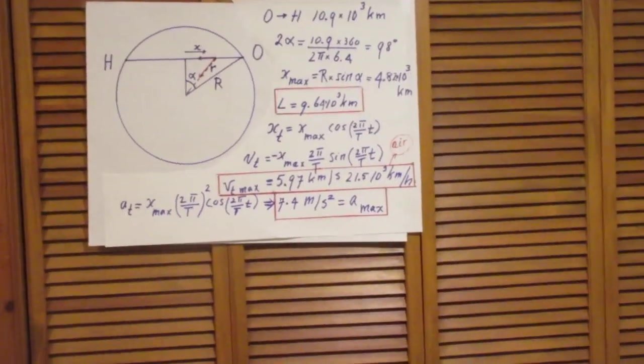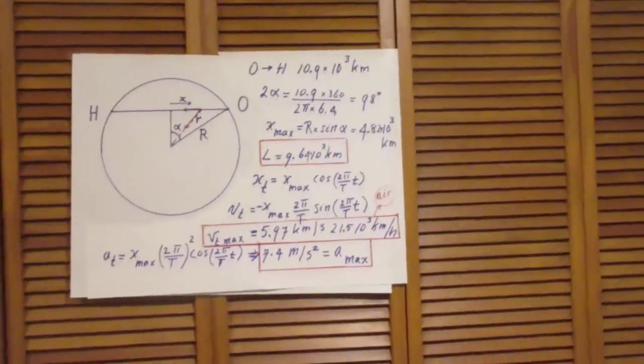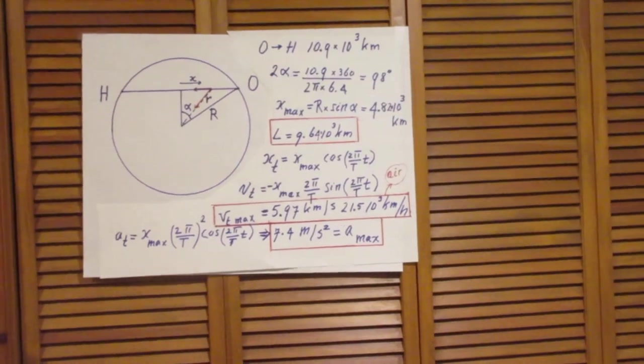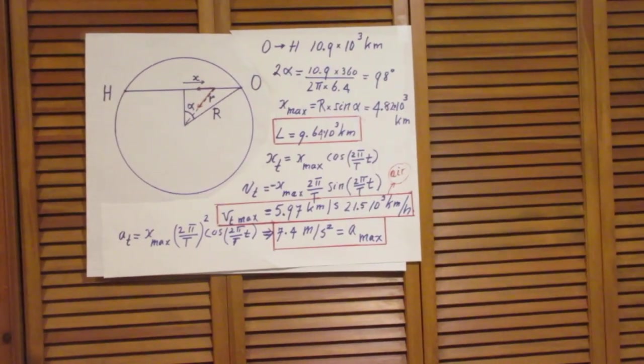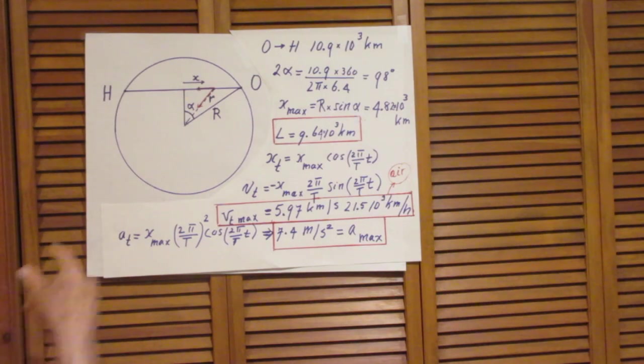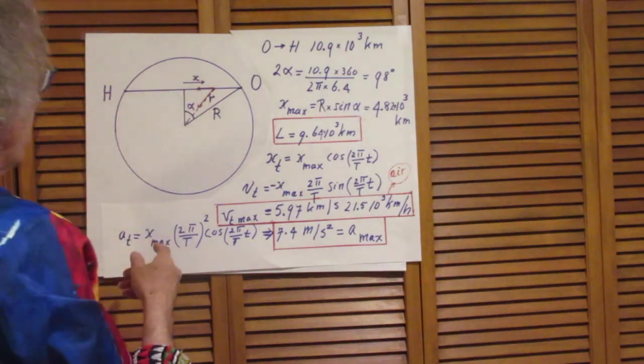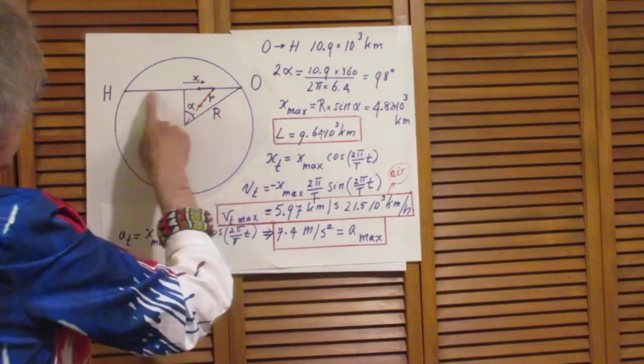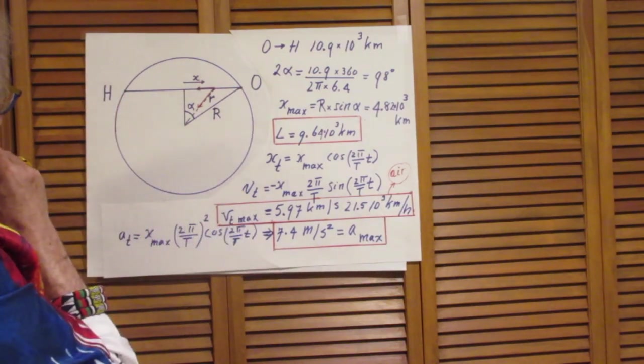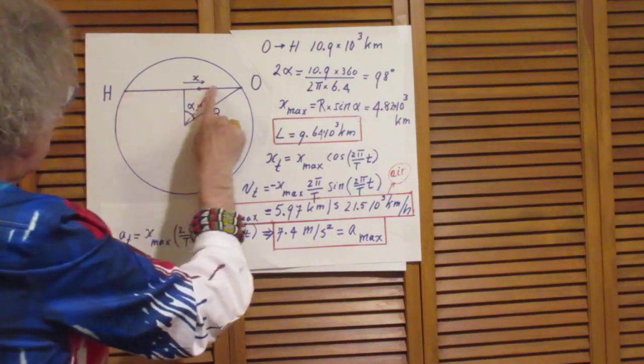This is a cross-section through the earth. This is the center of the earth, this is Oslo, this is Honolulu, and this is the tunnel. In the middle of the tunnel we call that x equals 0.